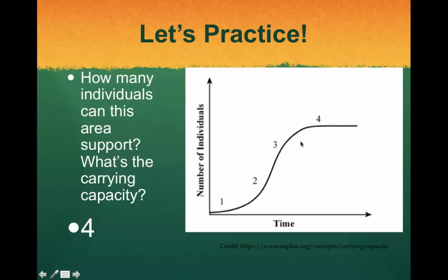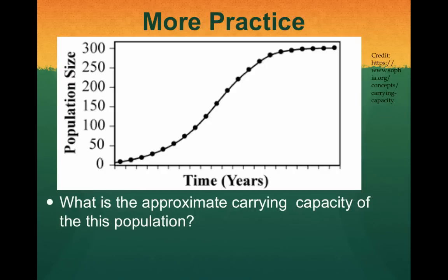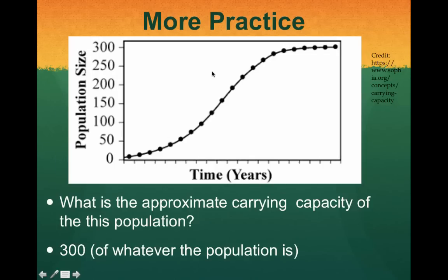Let's try another one. This graph shows population size on the y-axis — remember, y goes to the sky — and time goes across the x-axis. What is the approximate carrying capacity of this population? At what point is there the maximum number of organisms? You should have written down about 300. You can see right here where the carrying capacity maxes out — that's when the ecosystem can only sustain that many organisms and the population can't get any bigger.